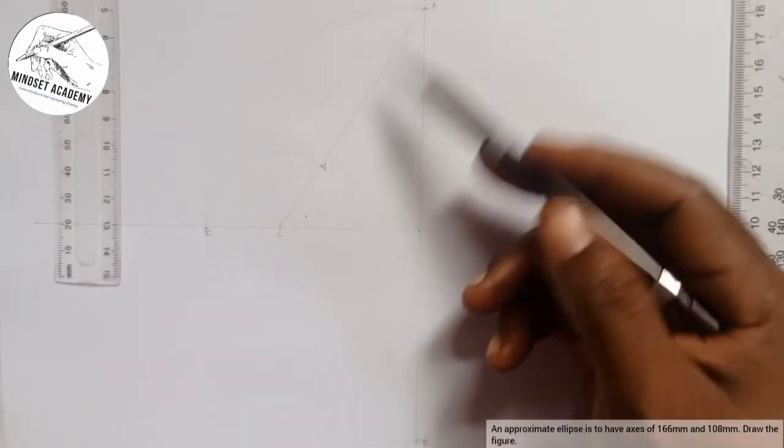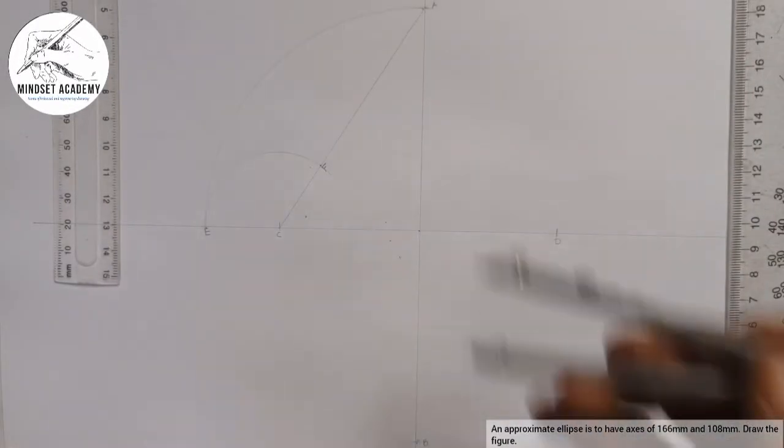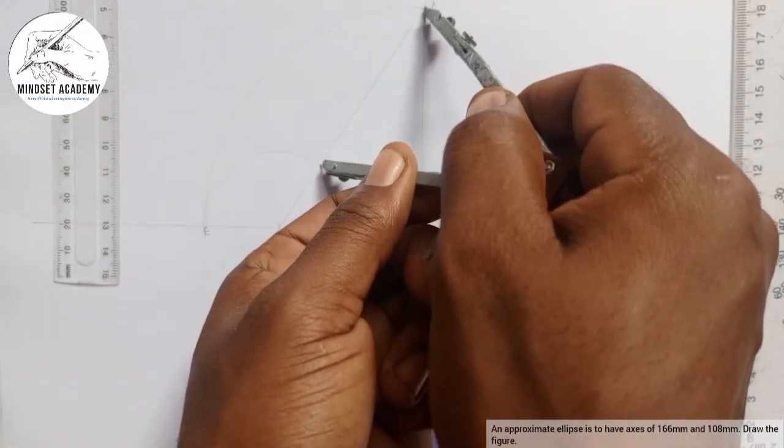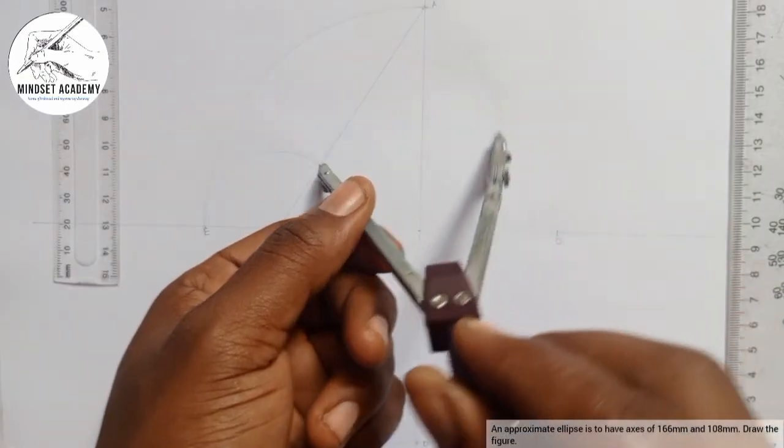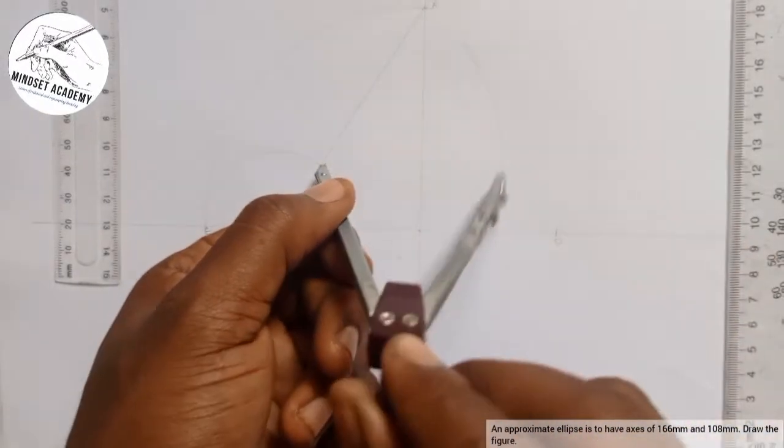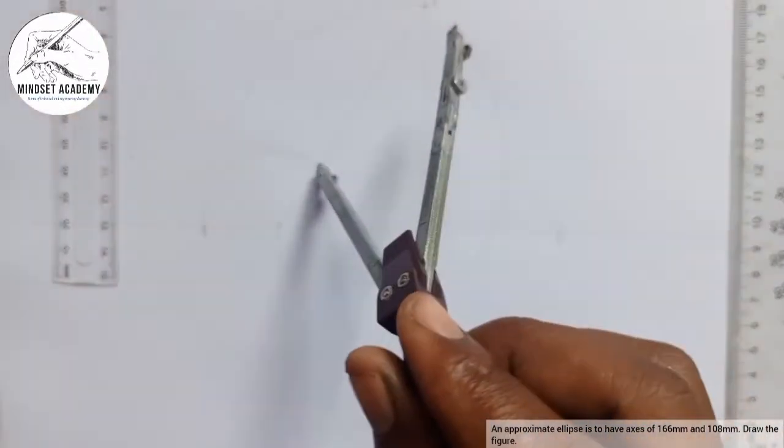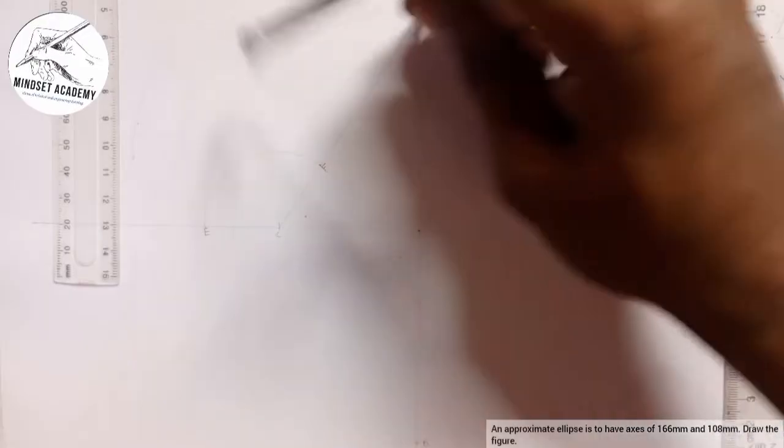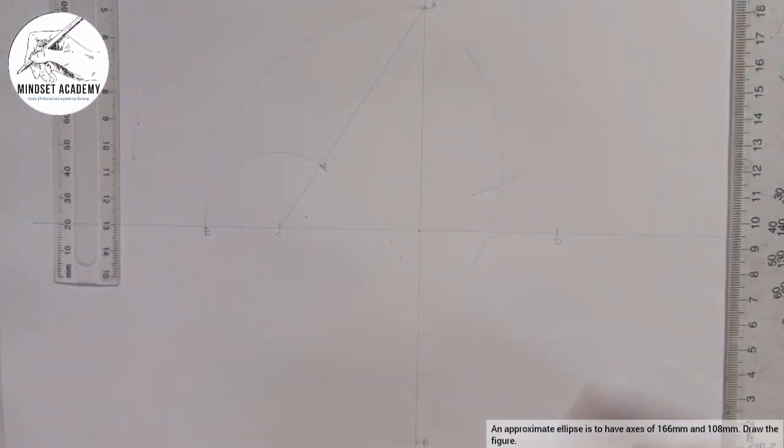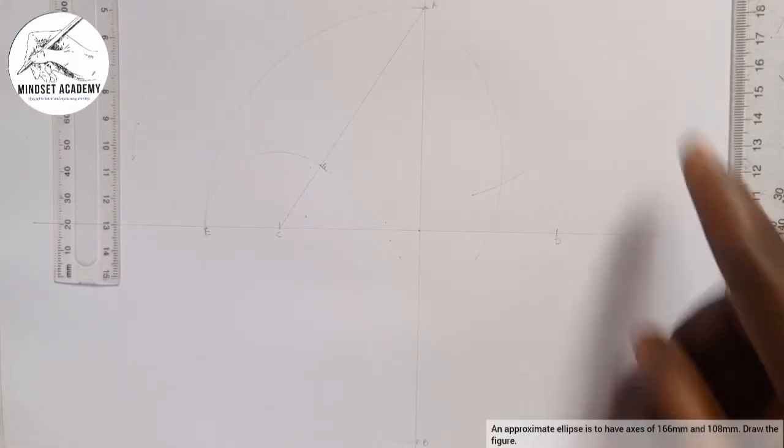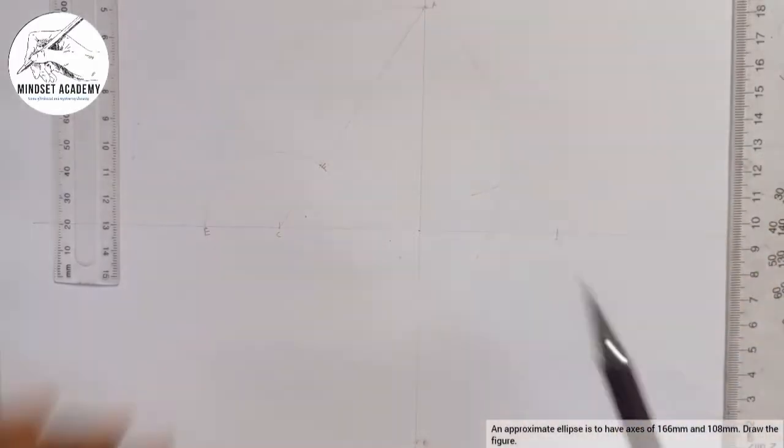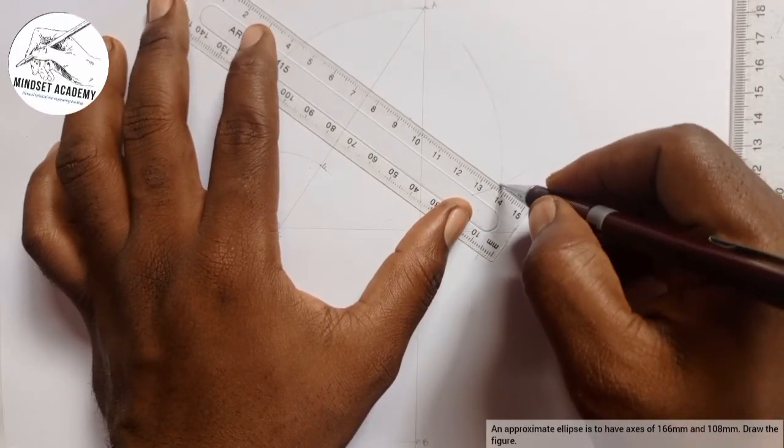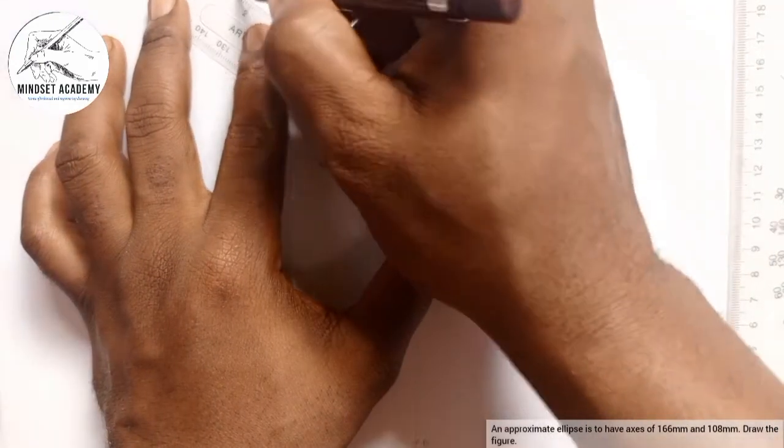Now I am going to bisect FA. By bisecting FA, you place your compass using the principle of bisection, place your compass both at C and A, and you strike an arc on this side, and you strike on the other side too. Then you place it on A, you strike an arc to cut the two arcs you've measured. So I am going to take my metal rule and I will draw a line from the two points there.